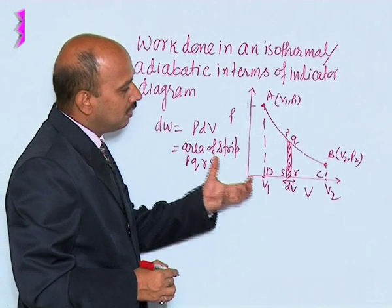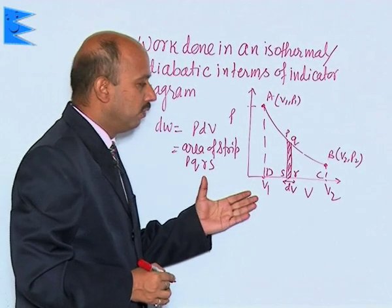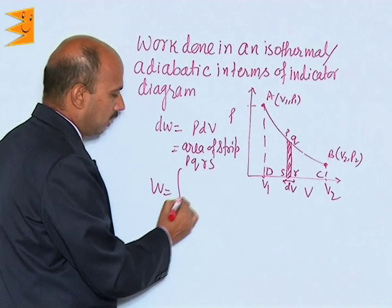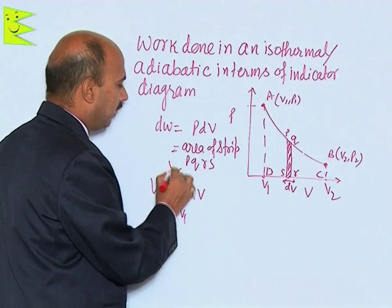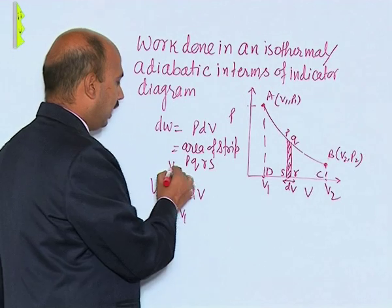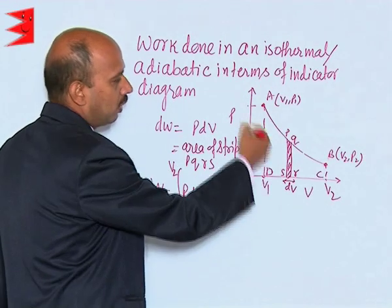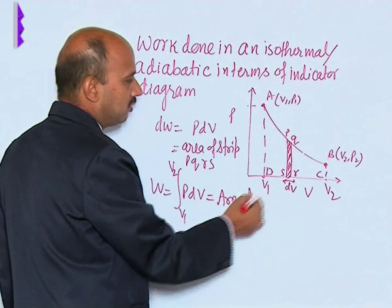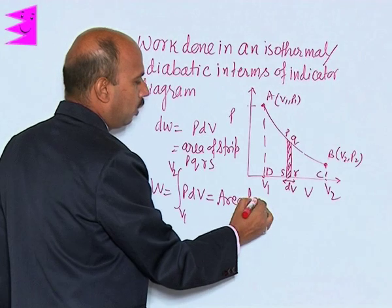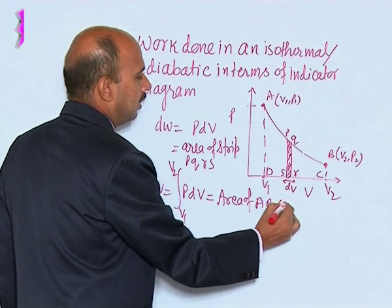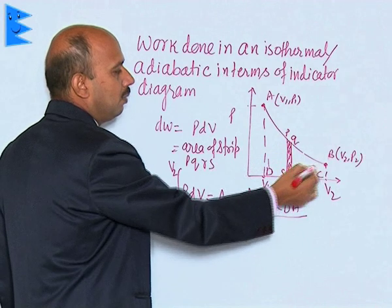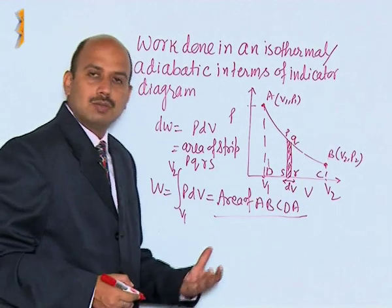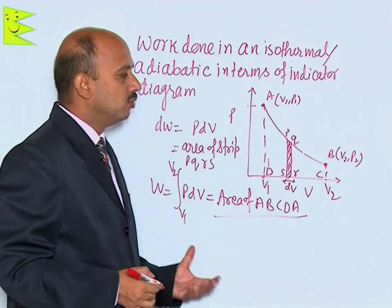To calculate the total area as volume changes from V1 to V2, we integrate: W = ∫(V1 to V2) P·dV. Integrating this gives the total area, which is the area of region A, B, C, D, A. So this entire area equals the work done. You can calculate the work done in an isothermal or adiabatic process using the PV diagram.